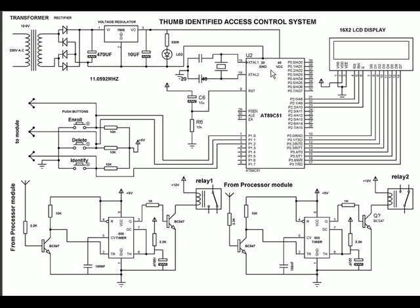That 5 volt is utilized for the microcontroller and other associated circuits, as this voltage remains constant with changing input voltage. This 5 volt is required for all other circuits. We have a processor module and we have a thumb module.